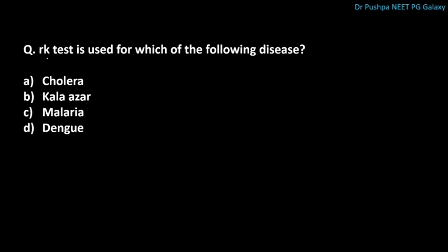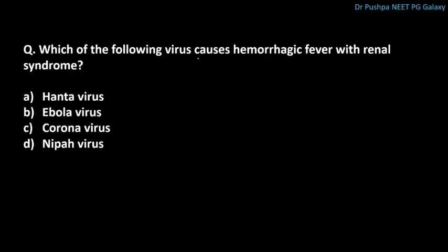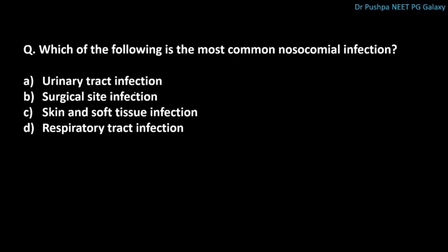The RK test is used for Kala-azar. For how long does immunity last after two doses of plague vaccination? The correct answer is six months. Immunity starts after five to seven days of vaccination. Which virus causes hemorrhagic fever with renal syndrome? The correct answer is Hantavirus. What is the most common nosocomial infection? The correct answer is urinary tract infection (UTI).